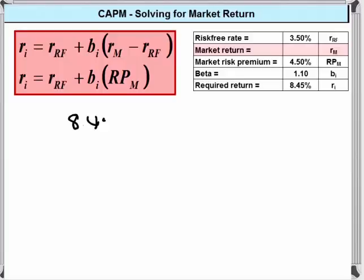8.45 is equal to 3.50 plus beta times the return on the market minus the risk free rate, 3.5.